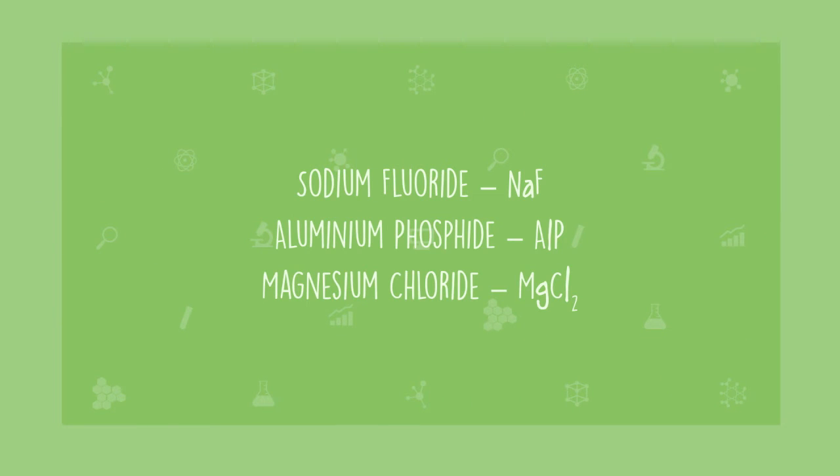While the naming system for these compounds is quite simple, you'll notice that the chemical formulae don't quite follow the same pattern. While the formula for sodium fluoride is NaF and aluminum phosphide is AlP, magnesium chloride is written as MgCl2. Why does the Cl have a small number just below, called a subscript?